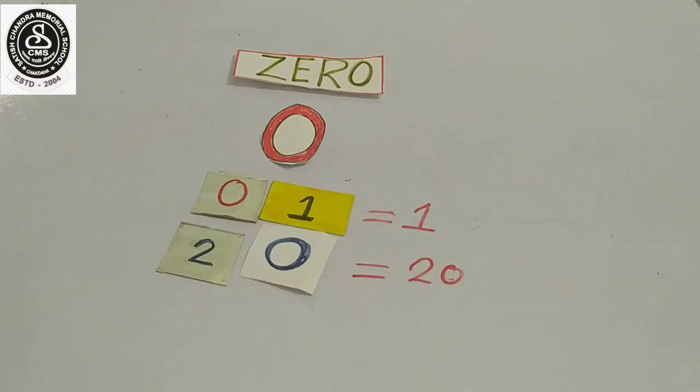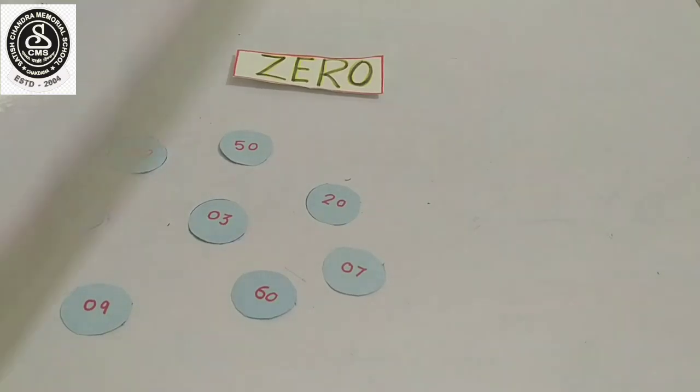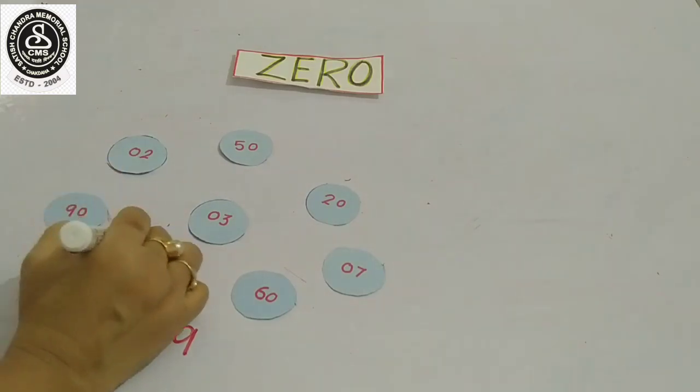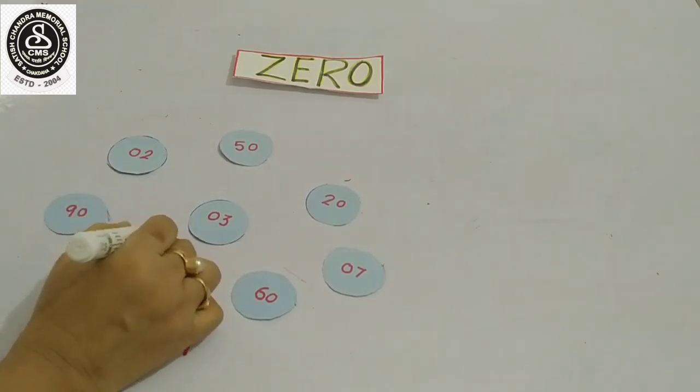Now we will do one activity. Here you can see I have written some numbers. So my first number is 09. 09 is equal to only 9. But my second number is 90. So 90 is equal to 90.